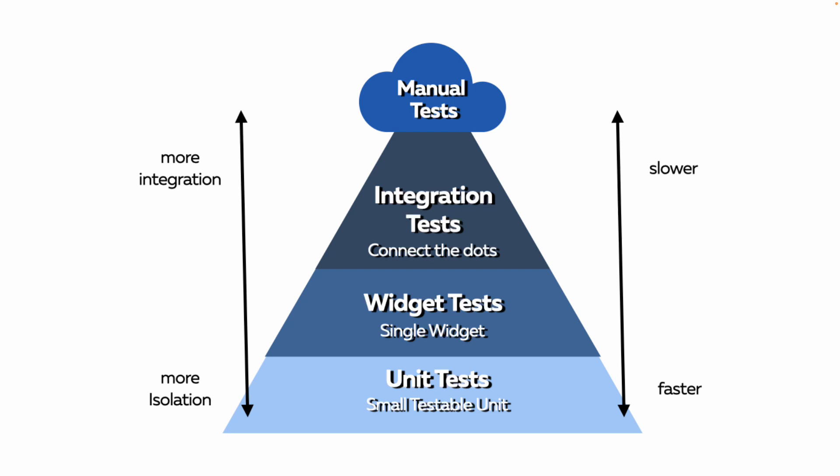Let's start with the unit test. It's at the bottom of the pyramid and covers the most area. Unit tests test a small, testable unit — basically a single functionality like methods. It's quite fast because we don't need any device connected, and it works in isolation, meaning we don't connect to a database or APIs — just testing a specific class and its functionality.